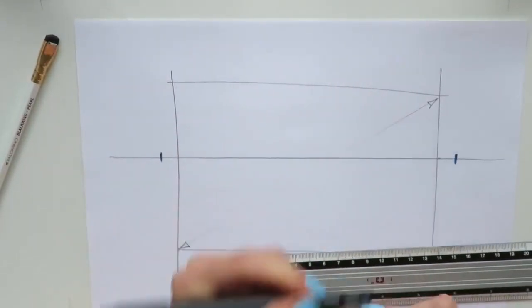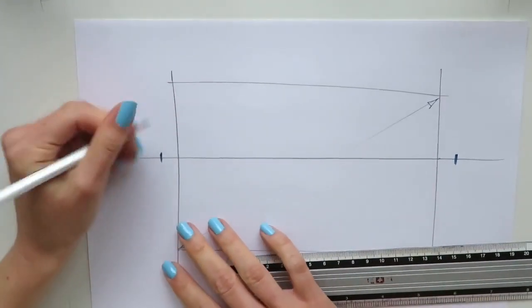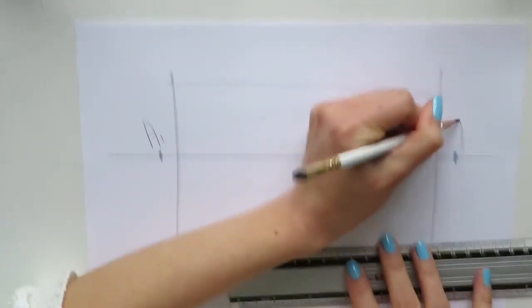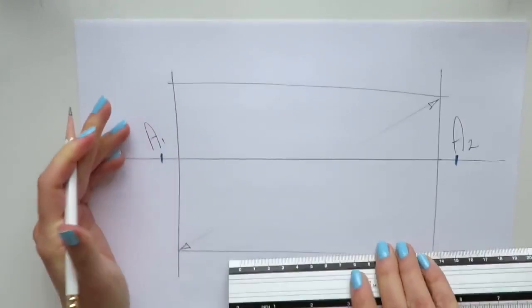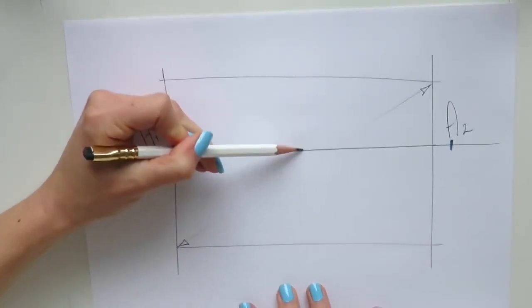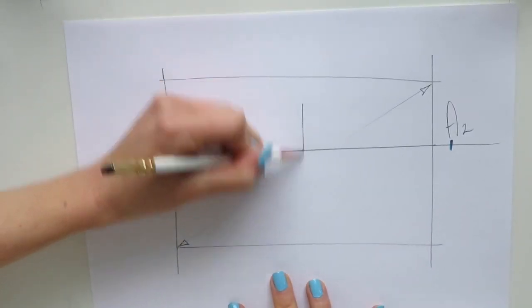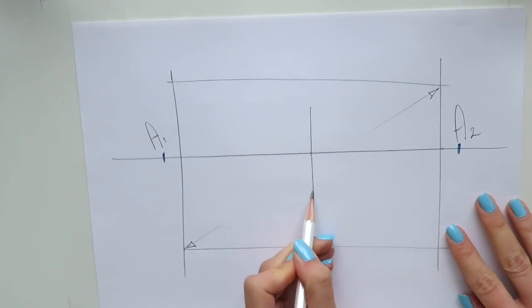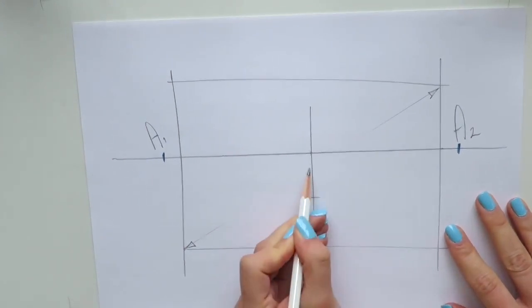And here we go, A1, A2 vanishing points. After that I'm going to place a vertical line somewhere in the middle of my picture frame, but maybe a little bit closer to my second vanishing point.